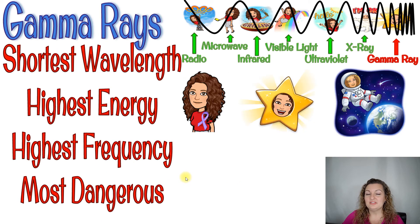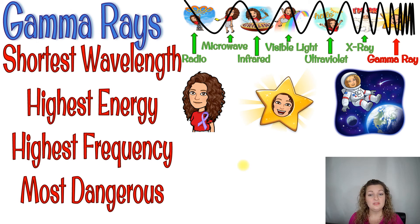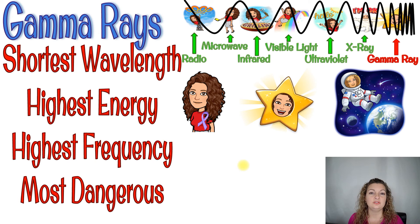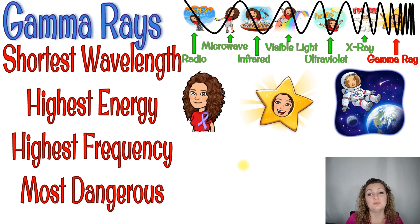Last up is gamma rays, and gamma rays are the very last one in our electromagnetic spectrum because they have the shortest wavelength, the highest energy, and the highest frequency — the highest number of waves per second. They are the most dangerous ones on the electromagnetic spectrum. These are what we use for cancer treatment on Earth; if you have cancer, they may use something called a gamma knife, which is just gamma rays shooting at that cancer to kill it. We also use gamma radiation for really cool things like mapping our universe — sending out gamma rays lets us see stars and nebulas that we can't see otherwise. NASA uses gamma rays a lot for that.